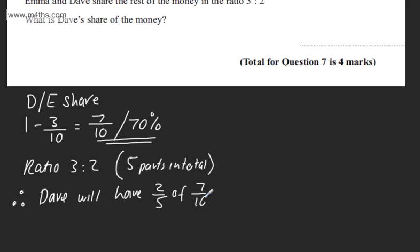So he's going to have two fifths of seven tenths. Of means multiply. So all I'm going to do is write two over five times seven over ten. We could at this stage simplify, or we can just multiply the numerators to give fourteen, multiply the denominators to give fifty. If I wanted to cancel this down, I can write this now as seven over twenty-five.